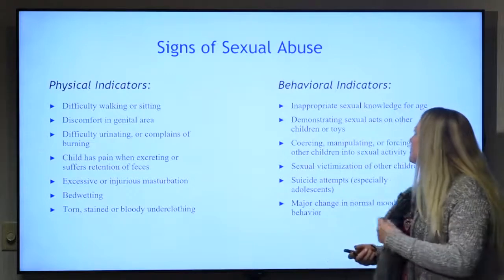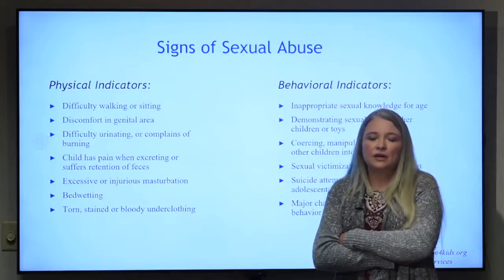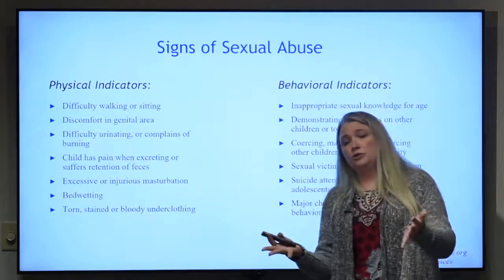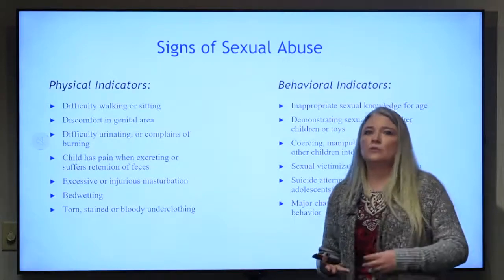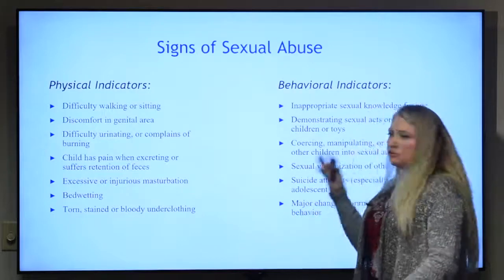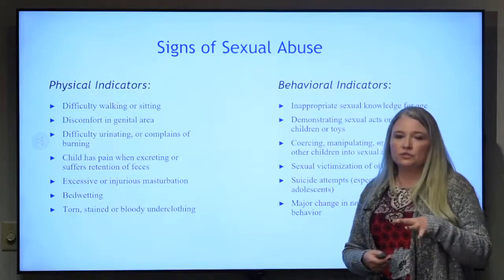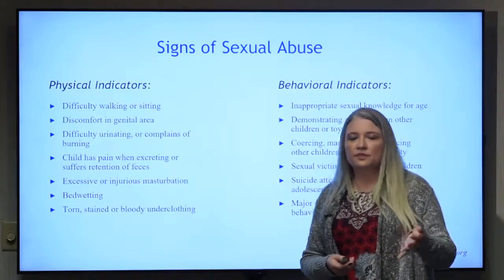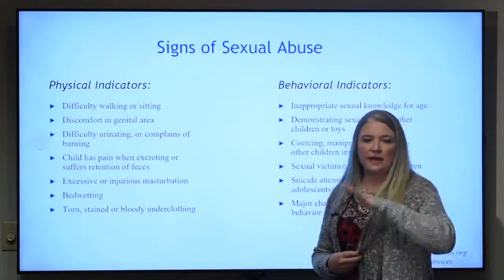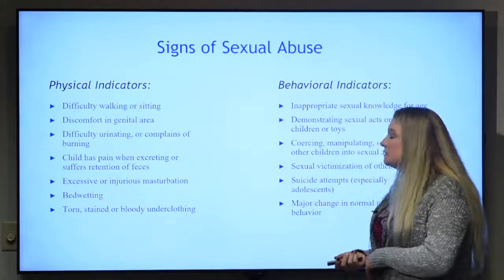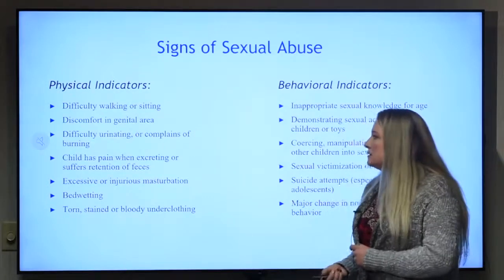Behavioral indicators: a child acting inappropriate for their age. A four-year-old showing curiosity about body parts with another four-year-old is not abnormal. But a nine-year-old masturbating in school is concerning. Children who have sudden mood changes — I've had patients who went from straight-A students to failing and dropping out of school. If a kid has been acting normal and then their behavior totally changes, that's concerning.